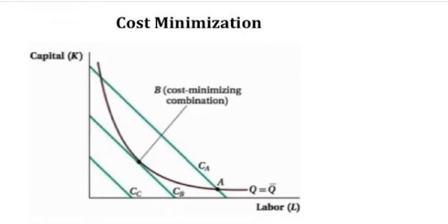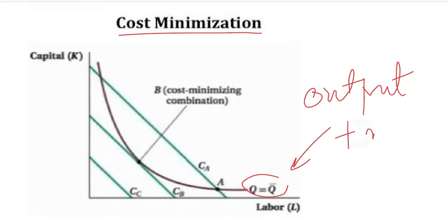Moreover, we can also try to minimize the cost subject to an output constraint. Here the situation is reversed. Now the constraint is in terms of output. We have a certain target of the output that we want to achieve, and in that we have various levels of costs out of which we will choose the lowest one.